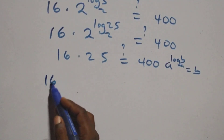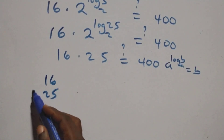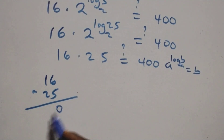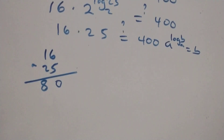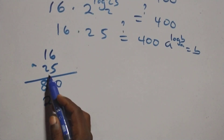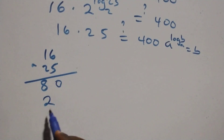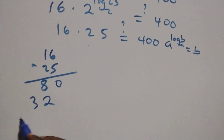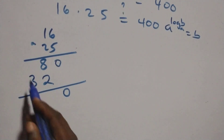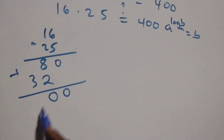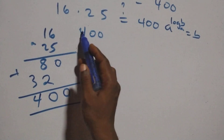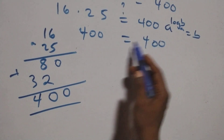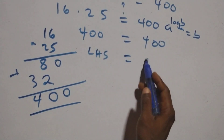Here we have 16 times 25. Multiplying: 16 times 25 equals 400. So here we have 400 equals 400. The left hand side equals the right hand side.